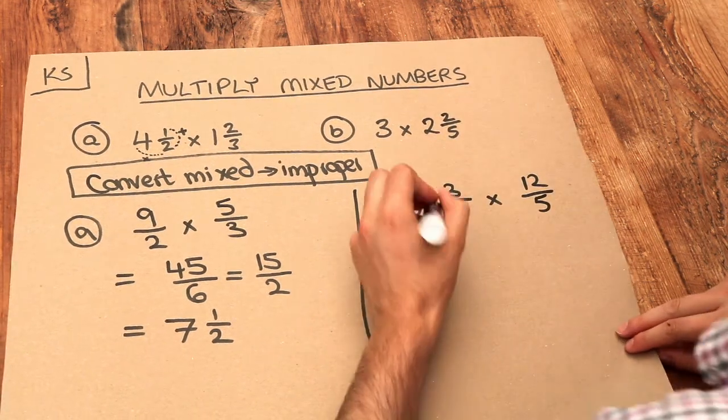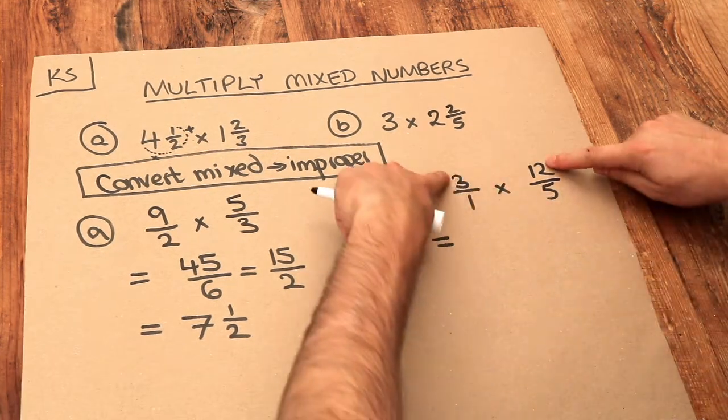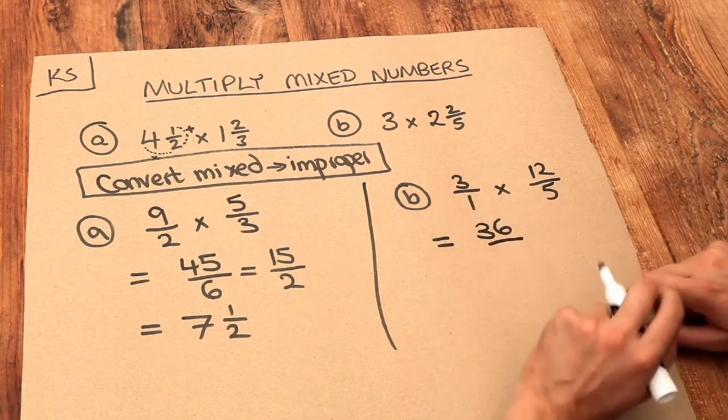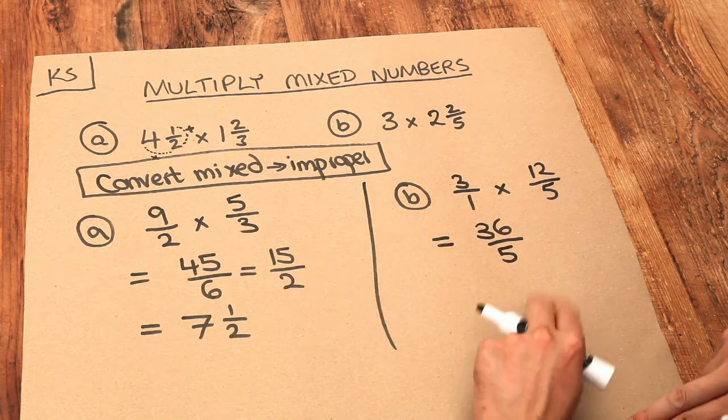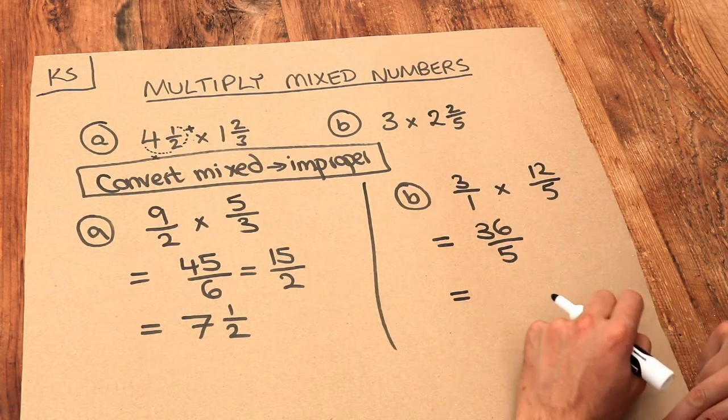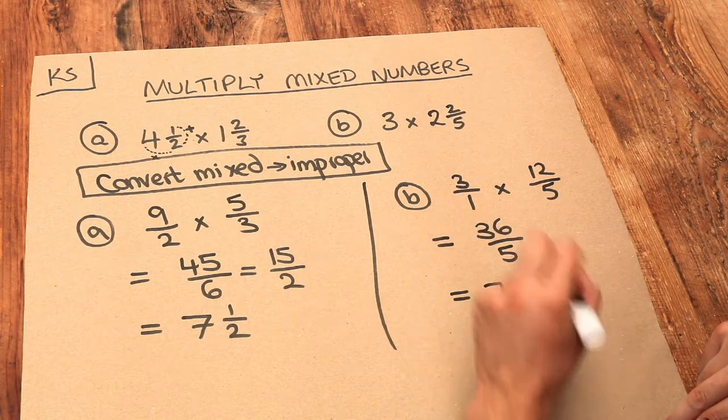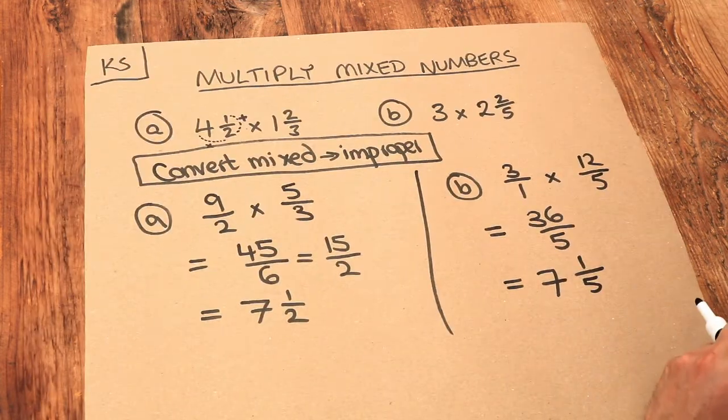We multiply the numerators: three times twelve is 36. We multiply the denominators: one times five is five. If you want, you could convert that into a mixed number. Five goes into 36 seven whole times with a remainder of one, which we put over the same denominator. That's the final answer.